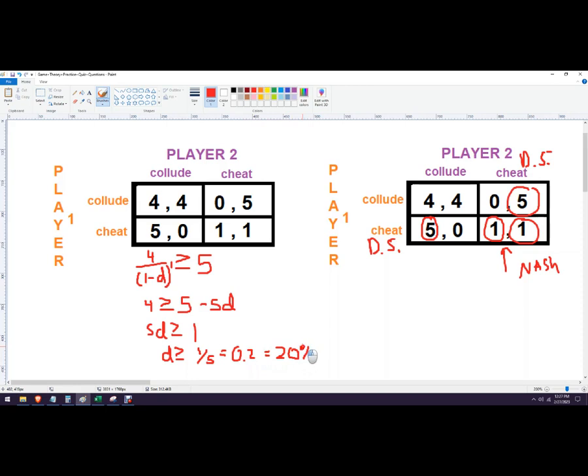So if the discount rate is 20 percent or higher, then it's better to collude with that pretty high discount rate. That's how to solve this. You take the good payout divided by one minus the discount rate for however many periods, and that needs to be equal to or greater than the good outcome from cheating.